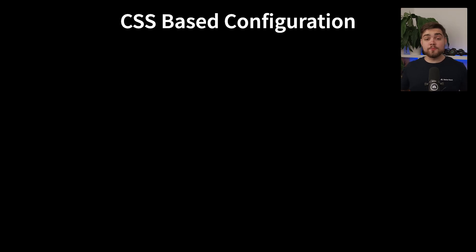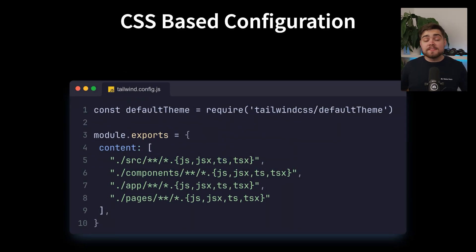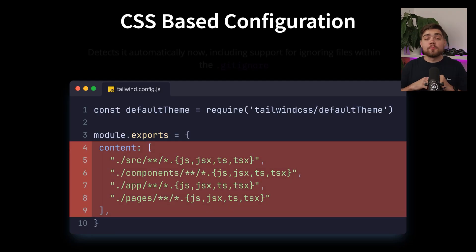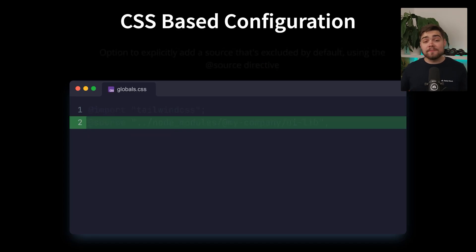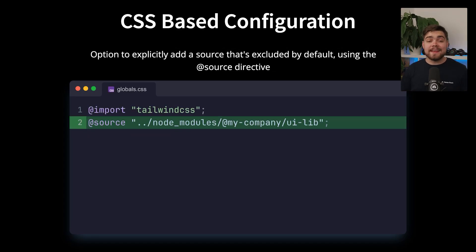Another thing you may remember from the Tailwind config is the content array — this is where you had to tell Tailwind where it was being used. They have removed this entirely now and it's all done automatically for you, including support for ignoring files in your .gitignore. If you do ever need to explicitly add a source that's been excluded, you can always add it with the new @source directive right in your CSS file.